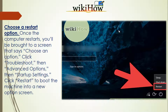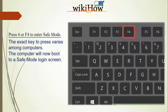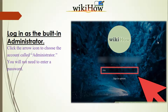Click Startup Settings, then click Restart to boot the machine into a new option screen. Press 4 or F4 to enter safe mode. The exact key to press may vary among computers. The computer will now boot to a safe mode login screen.